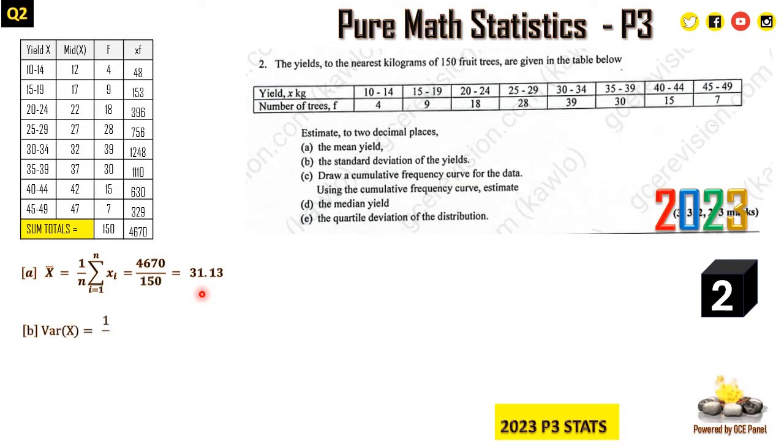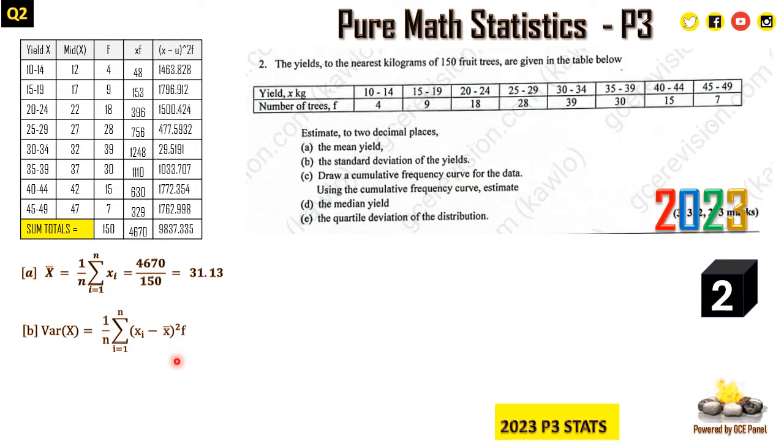There are two ways we can do this, but we can equally apply this formula: one over the total frequency times each score minus the mean, squared, times the frequency. We get the sum of that. In the case of a table, I can just put it here: each score, that's the first column here, the mid value 12 minus the mean, that's 31.13, I square that, and I multiply by the frequency.